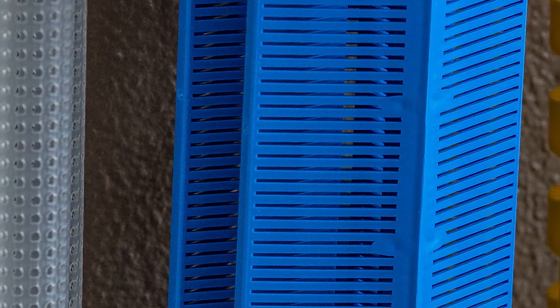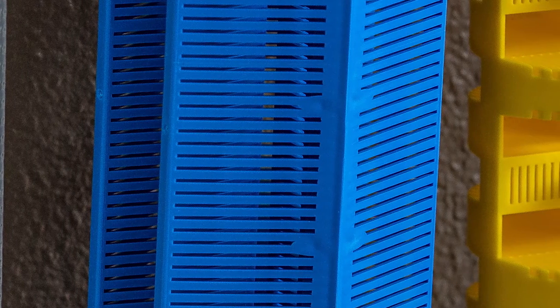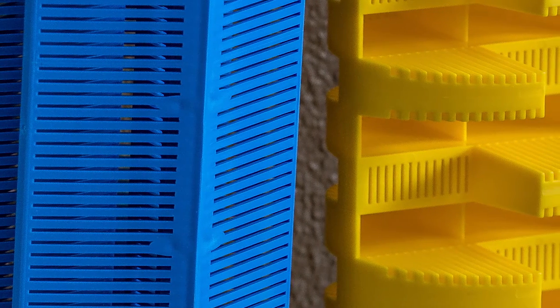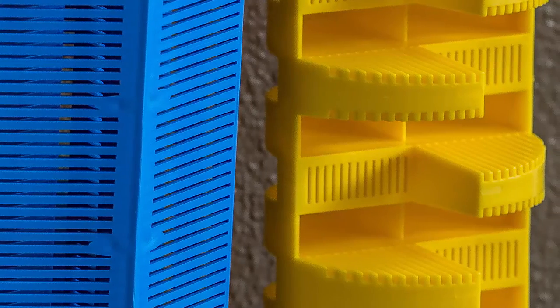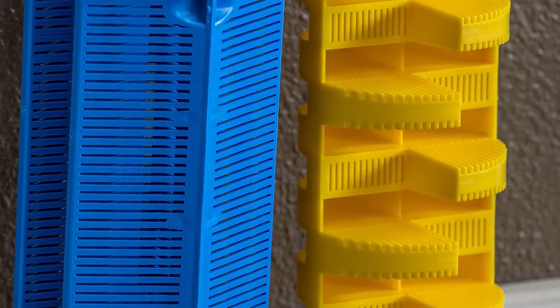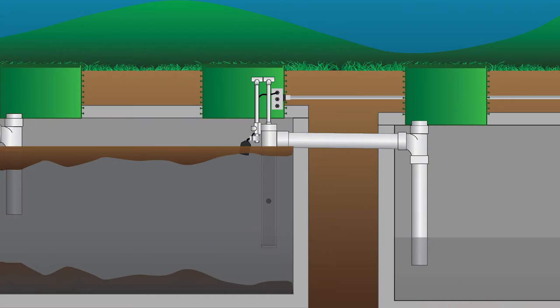Some of the differences include effluent filters constructed with more of a mesh-type screen, or with slots cut into the filter itself. Waste can either pass through the mesh, or in the case of slotted units, the effluent passes through the slots. Most are rated for a size of slot or holes in the mesh — most commonly 1/8 inch. There are effluent filters that go down to 1/16th and 1/32nd inch, but 1/8 inch is usually a pretty effective size for reducing total suspended solids and BOD.